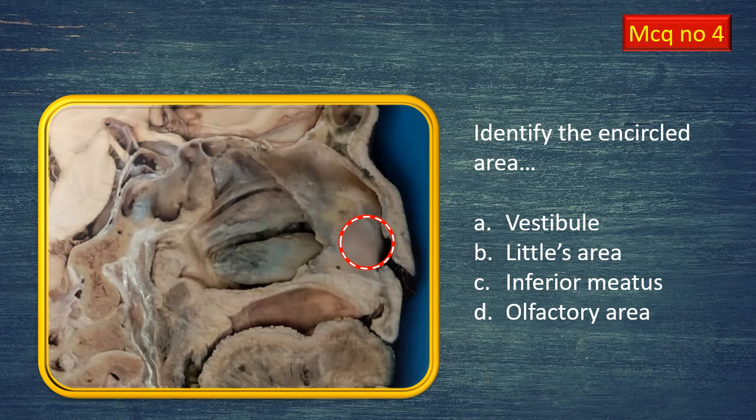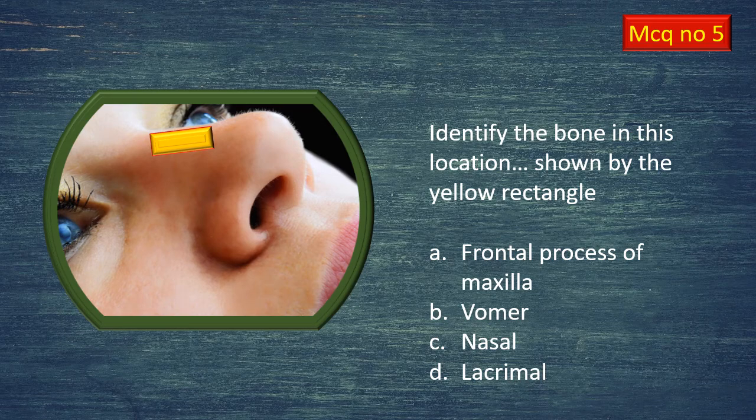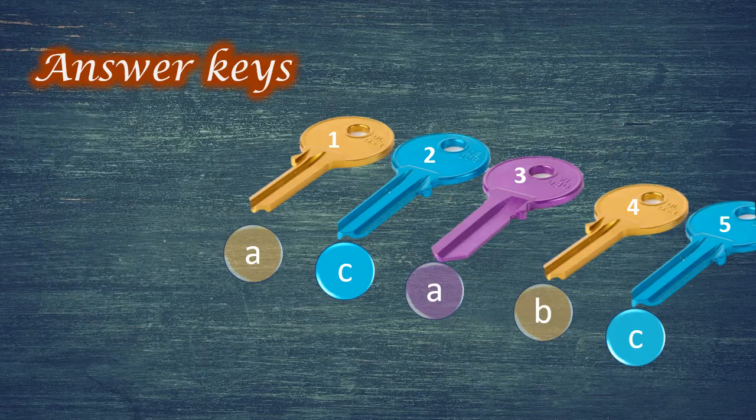If you are running short of time, freeze the video at each slide and take as much time as you want. MCQ number four: a red-and-white dashed circle marks a specific area — identify what that circled region is. Choose the best answer from four choices. MCQ number five: given an external view of the nose as seen in a living individual, a small rectangular yellow-marked area indicates a bone. Identify this bone, come to an answer, and then proceed to the answer key.